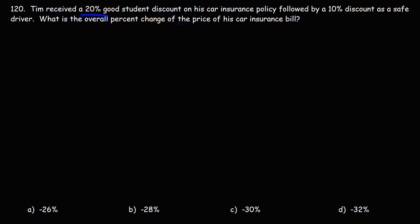If you're thinking about adding 20% and 10% to give you an answer of 30%, that won't work if they price the policy with the 20% discount first, and then a 10% discount right after. The only way that will work is if they apply the 30% all at once. But if they apply it in sequence, 30% won't be the right answer. The key word here is 'followed by.'